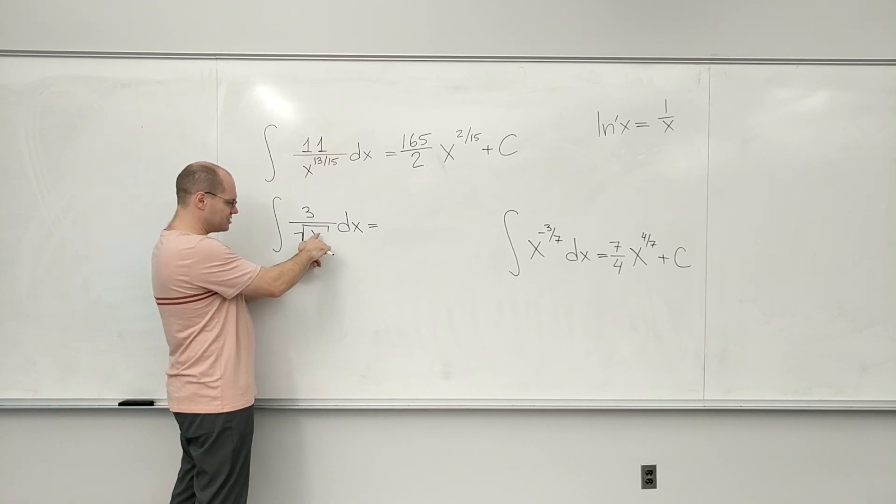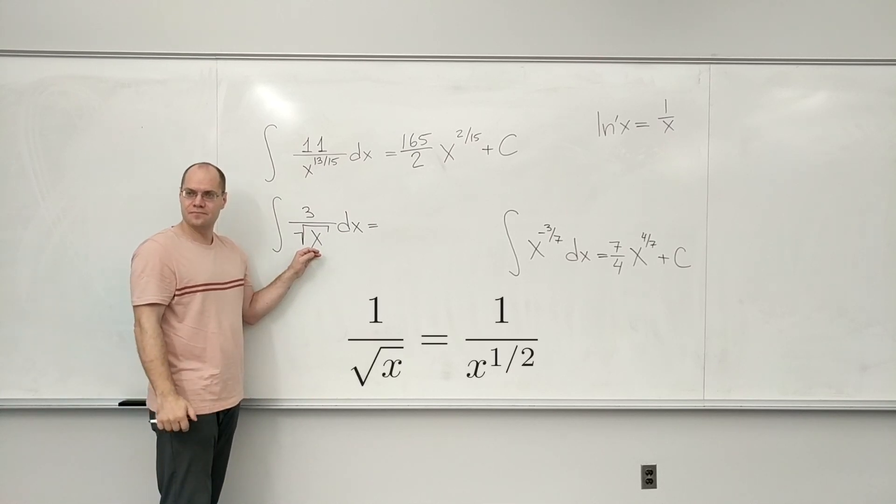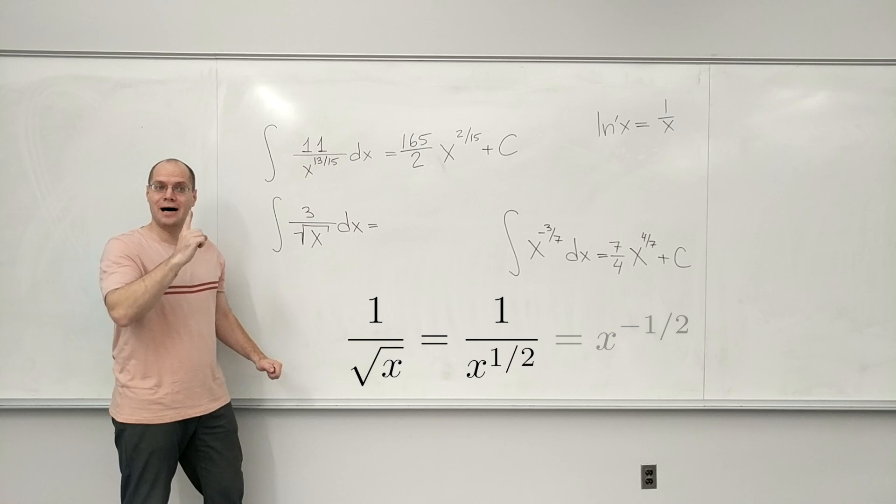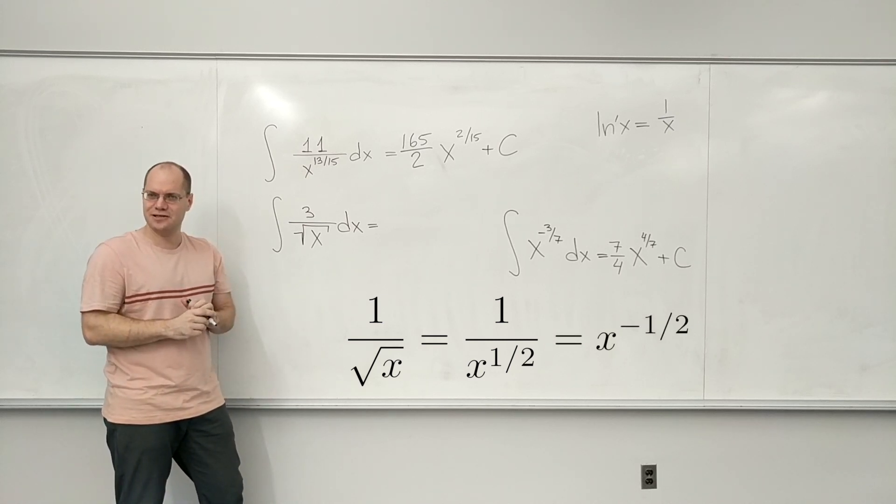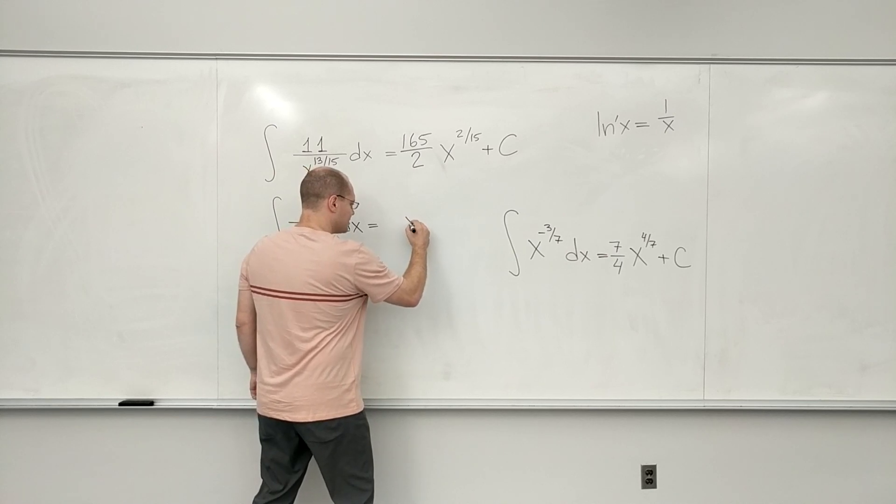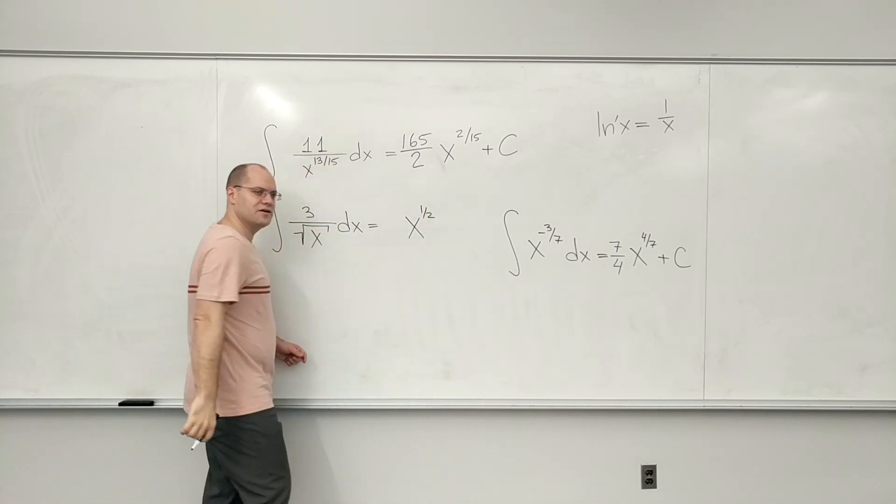And that would be to realize that square root means it's x to the power one half. And so if you write it in the numerator, it becomes x to the power minus one half. All of that happens in your head. So then adding one to the power, you realize that this is coming from x to the one half.